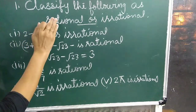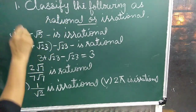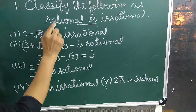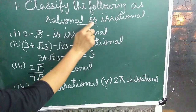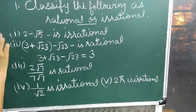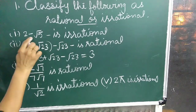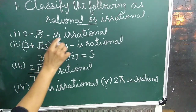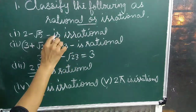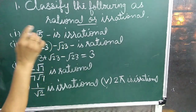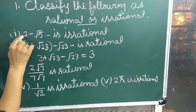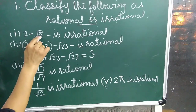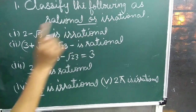Exercise 1.5. Classify the following as rational or irrational. First question: 2 minus root 5 is irrational, because subtraction of a rational number and an irrational number is an irrational number.